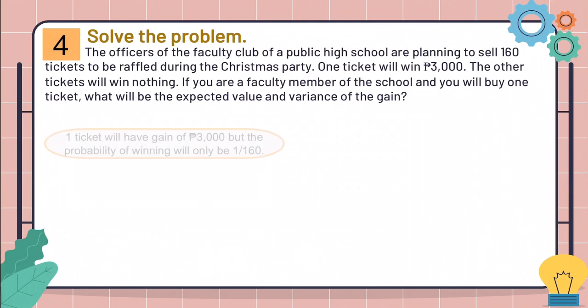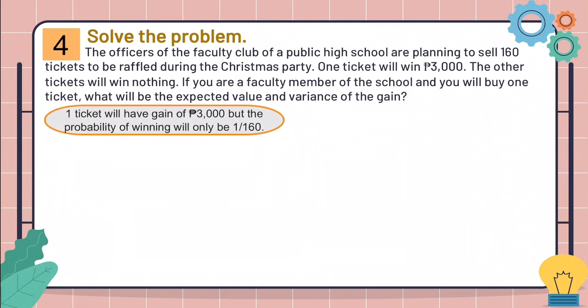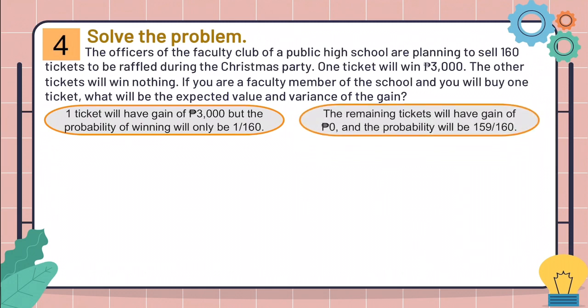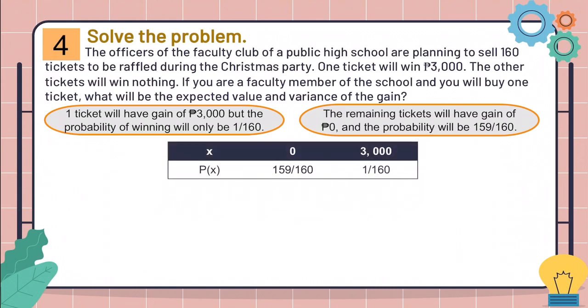Okay, first, one ticket will have a gain of P3,000, but the probability of winning will only be 1 over 160. On the other hand, the remaining tickets will have a gain of nothing and then the probability will be 159 over 160. So this is how the table distribution will look like.